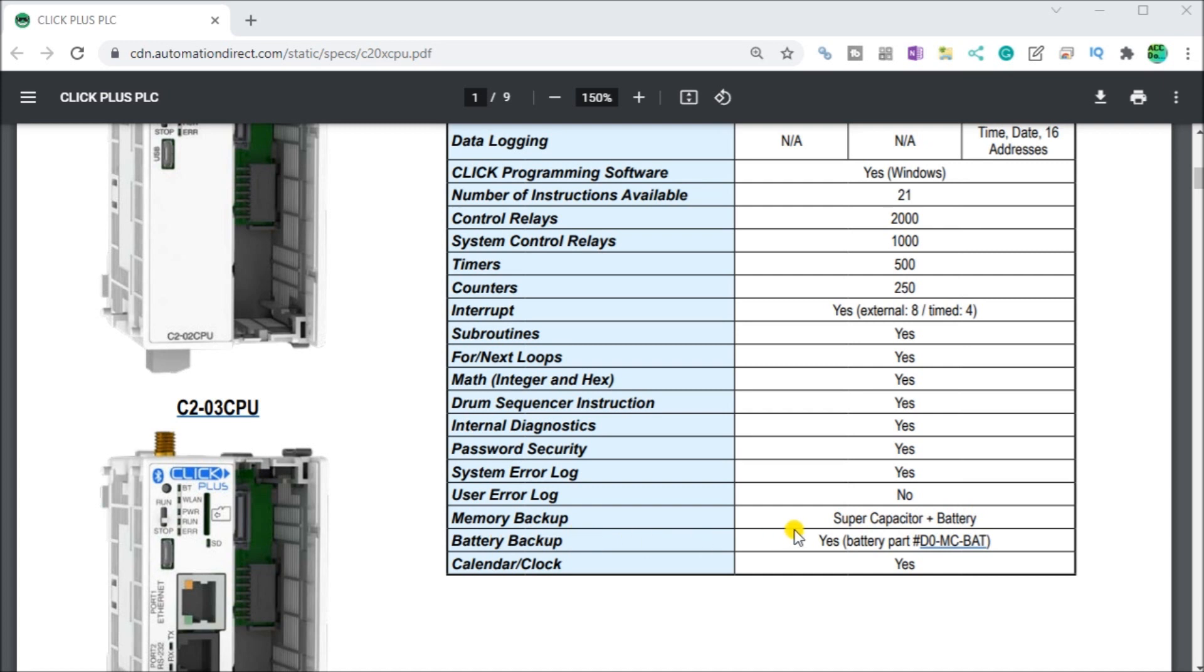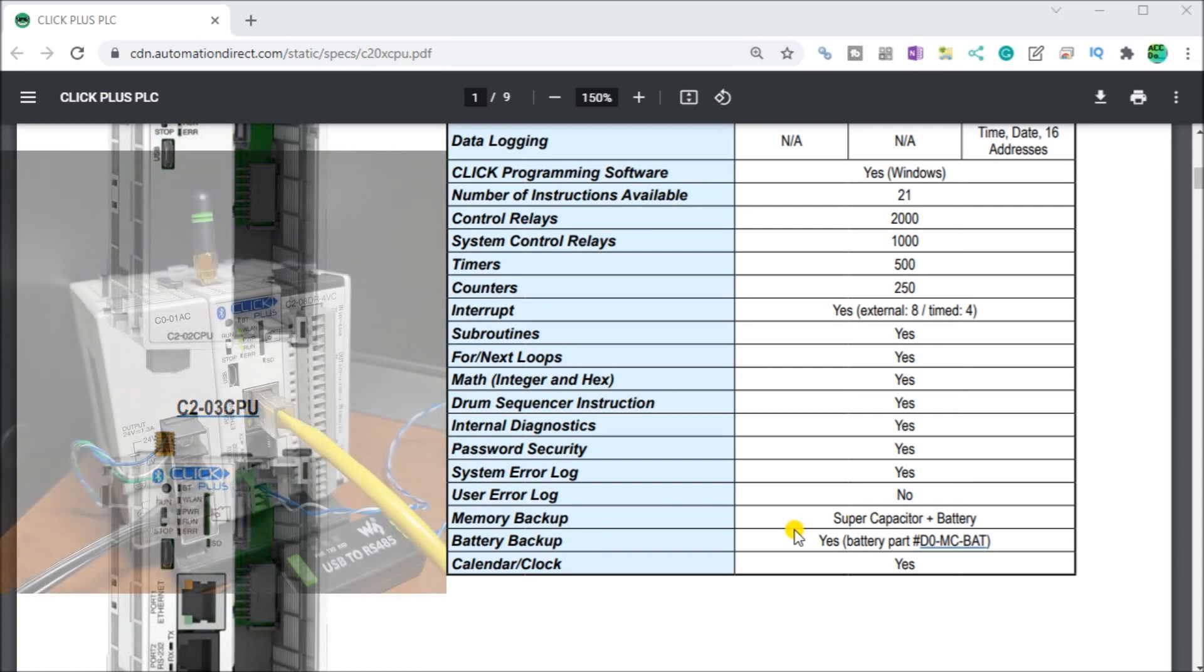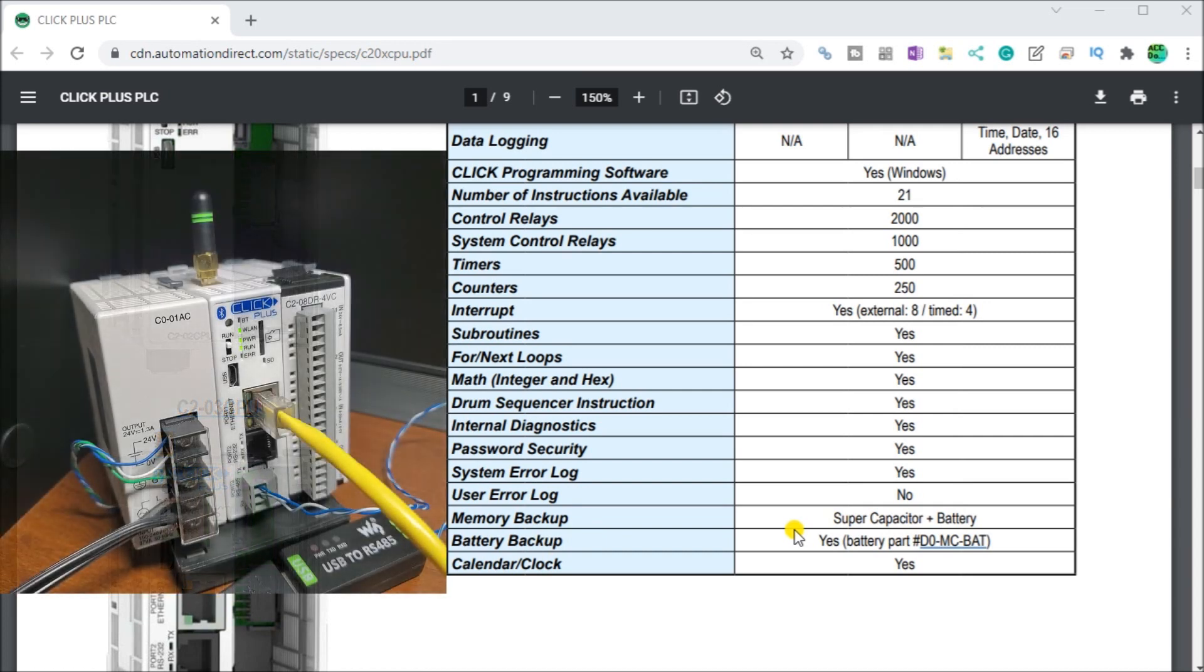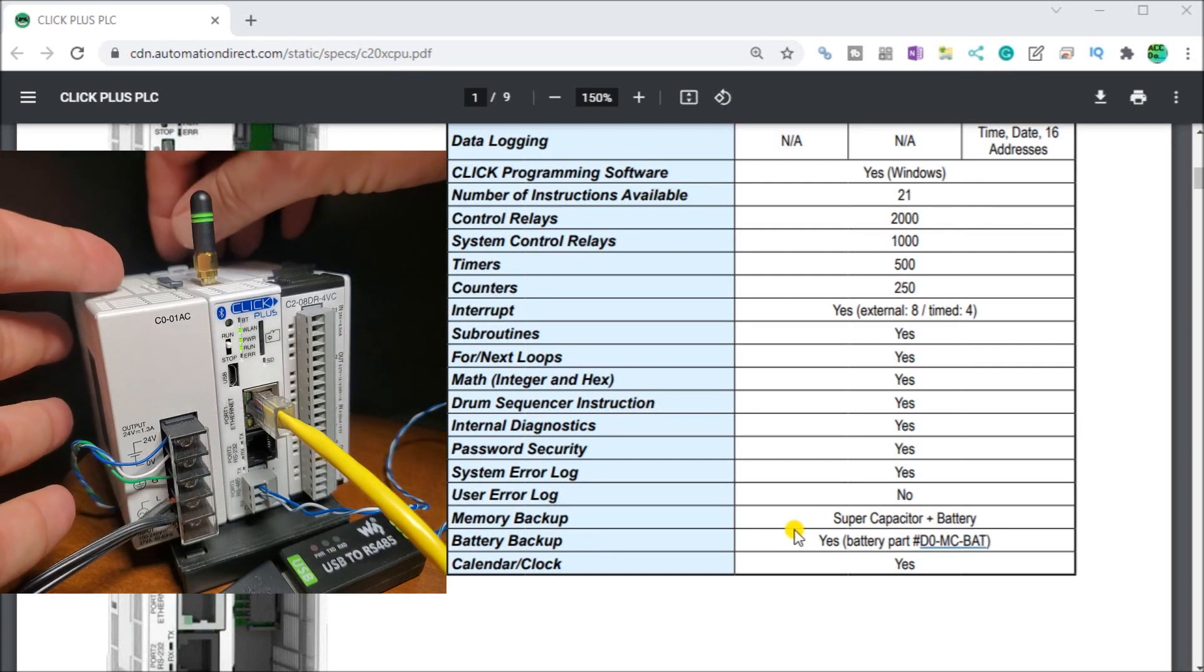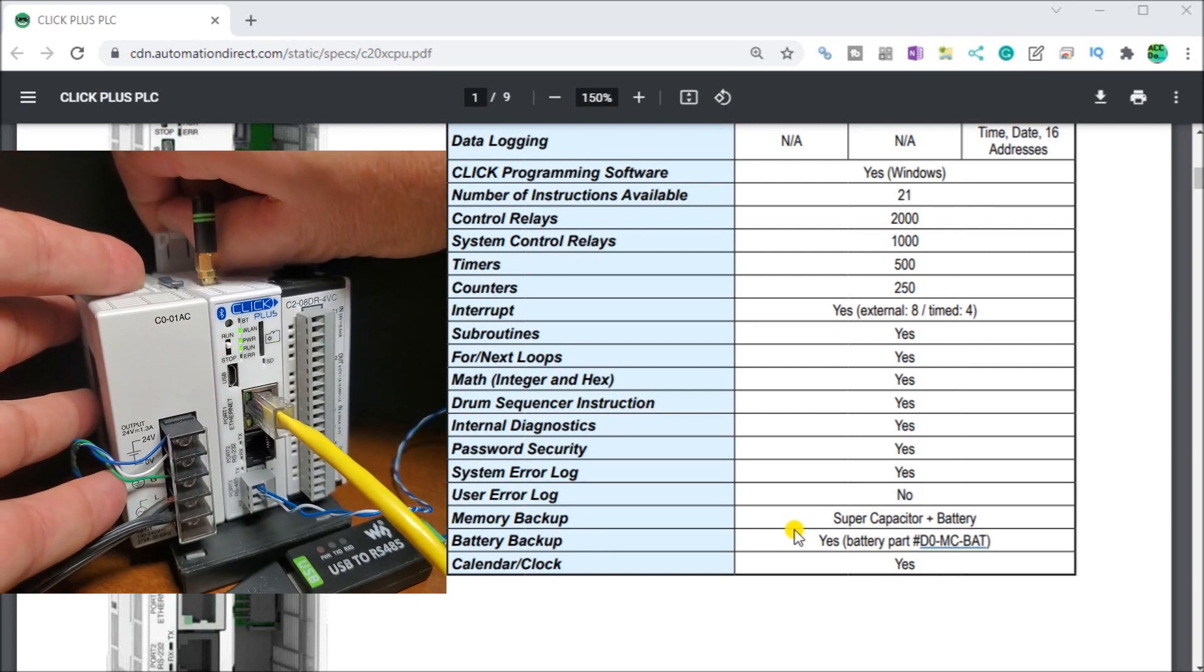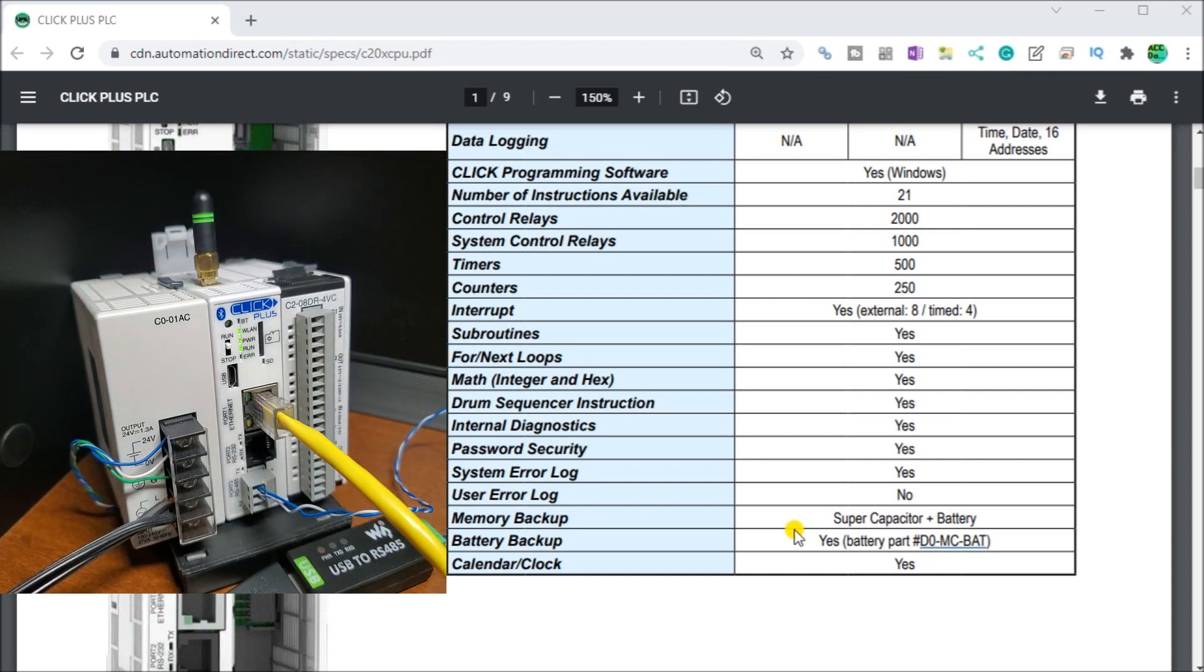Looking at our physical hardware now, here is our Click Plus PLC. If I were to open up the battery compartment, this is where I would actually put my battery in here to store it. Currently right now this controller does not have a battery in it, so I have one hour when I remove power to ensure that I put power back on or I will lose some of my data memory or data values. So what I have to do as a programmer is to make sure that I'm not using that memory area.